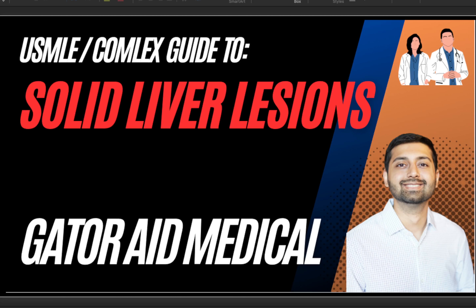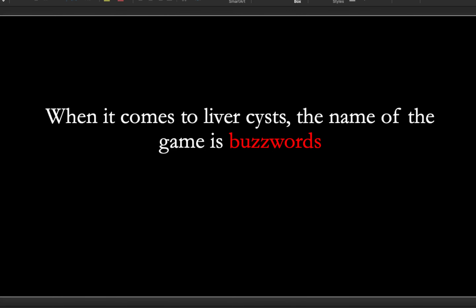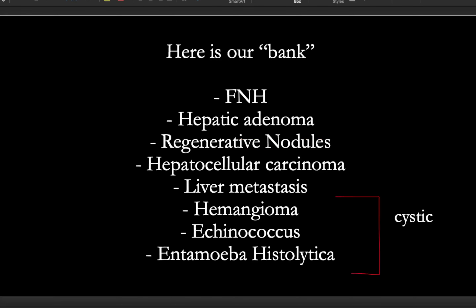These can be really confusing if you don't know the very specific little words to look for. We won't be getting into all the different clinical presentations today, just identifying them basically via imaging. When it comes to liver cysts, the name of the game is buzzwords. Our bank of different answers includes FNH, hepatic adenoma, regenerative nodules, hepatocellular carcinoma, liver mets, hemangioma, echinococcus, and entamoeba histolytica. The full diagnosis of different liver cysts goes well beyond these, but this is a good starting point.